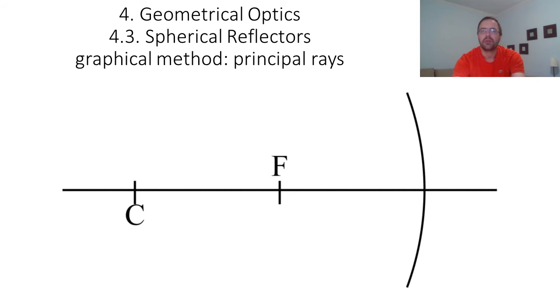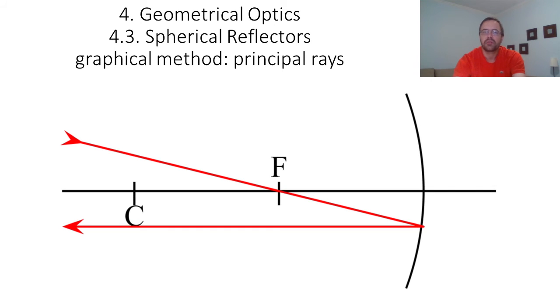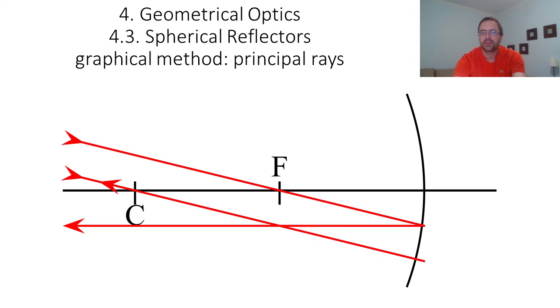For example, for a concave mirror with an object at infinity, you can trace a ray that goes through the focal point f, and such a ray must emerge parallel to the axis. Then you can trace another ray parallel to the first one that goes through the center, and that ray is reflected back in the same direction.